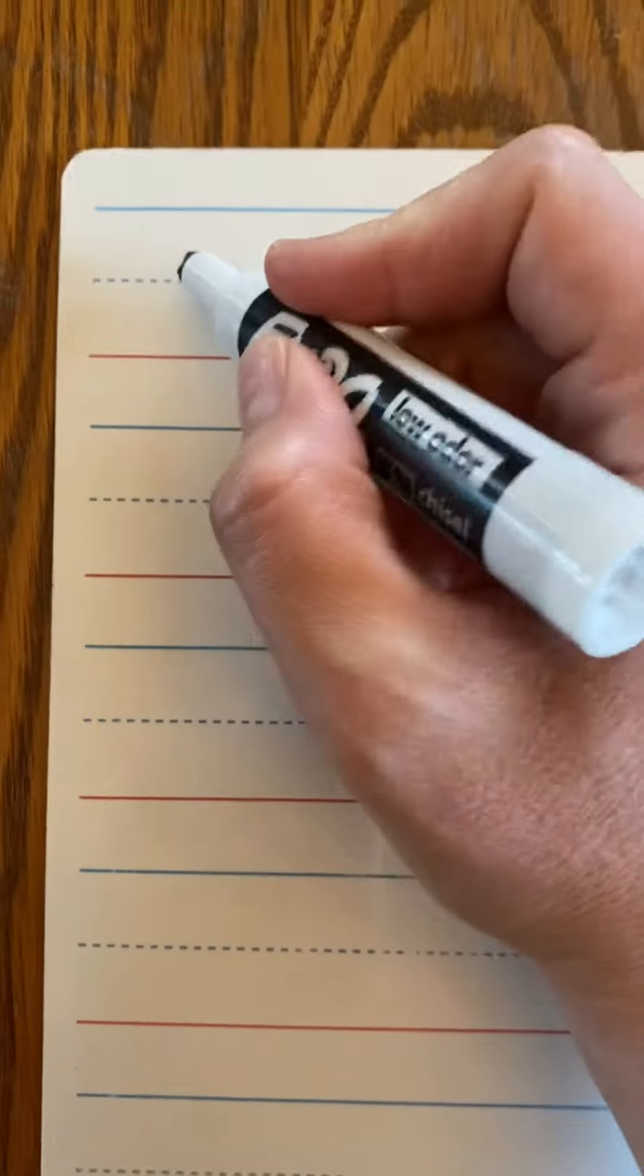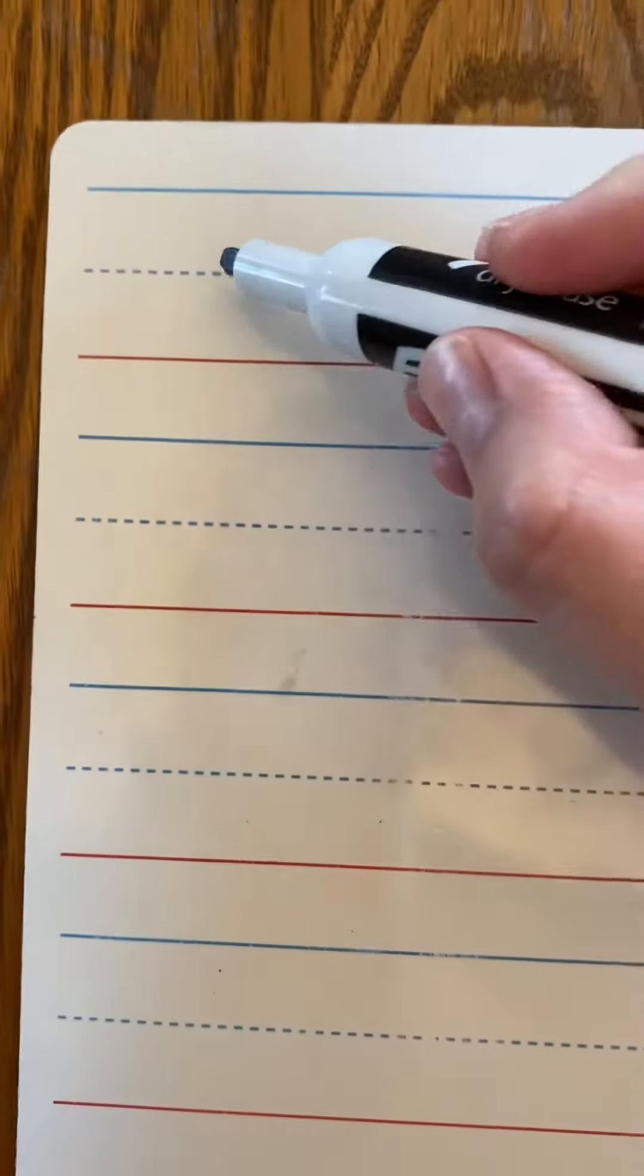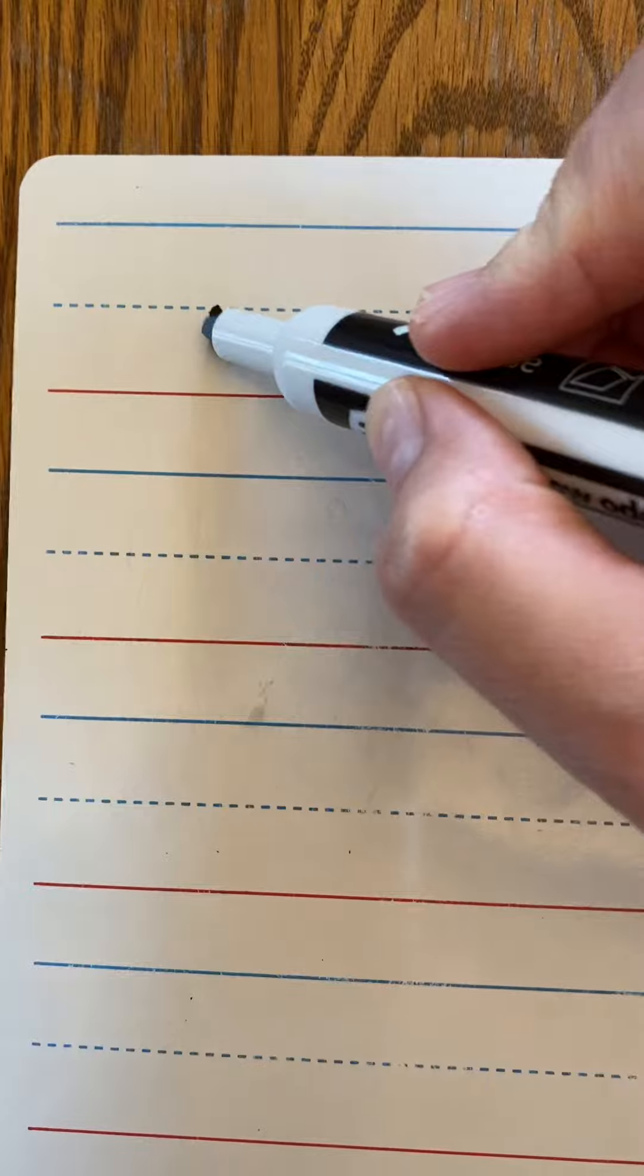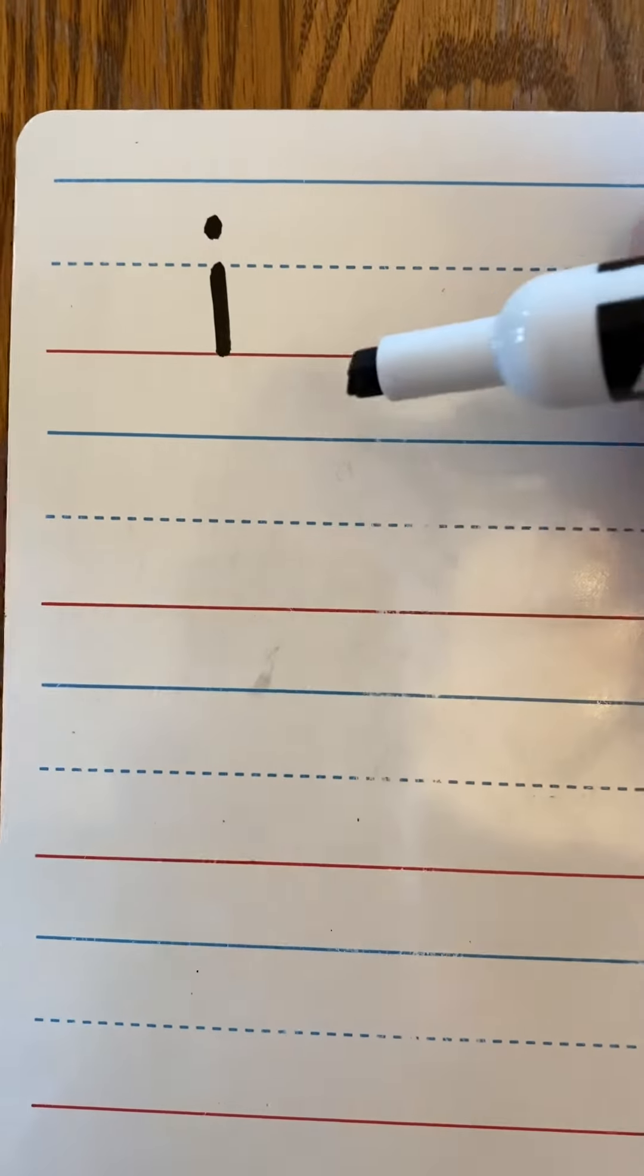So since we are going to work with lowercase I and it's a lowercase letter, do you know where we are going to start it? At the middle line. So you'll find the middle line and you'll make your ice cream treat with the sprinkle on top.